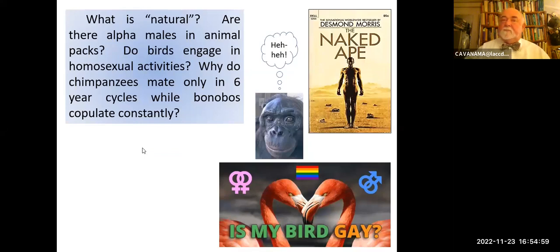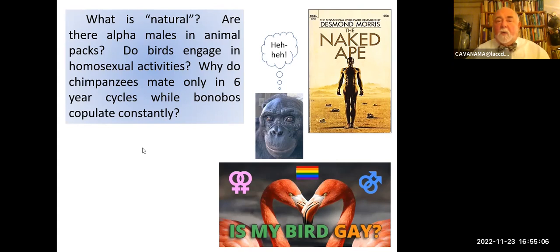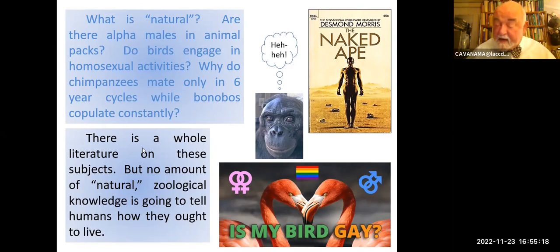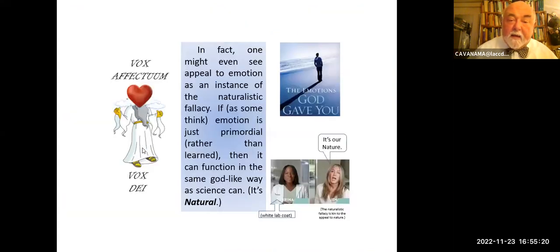Now, people talk about nature. What is natural? Are there alpha males in animal packs? Do birds engage in homosexual activities? Why do chimpanzees mate only in six-year cycles while bonobos copulate constantly? There's a whole literature on these subjects. No amount of natural or logical knowledge is going to tell humans how we ought to live.